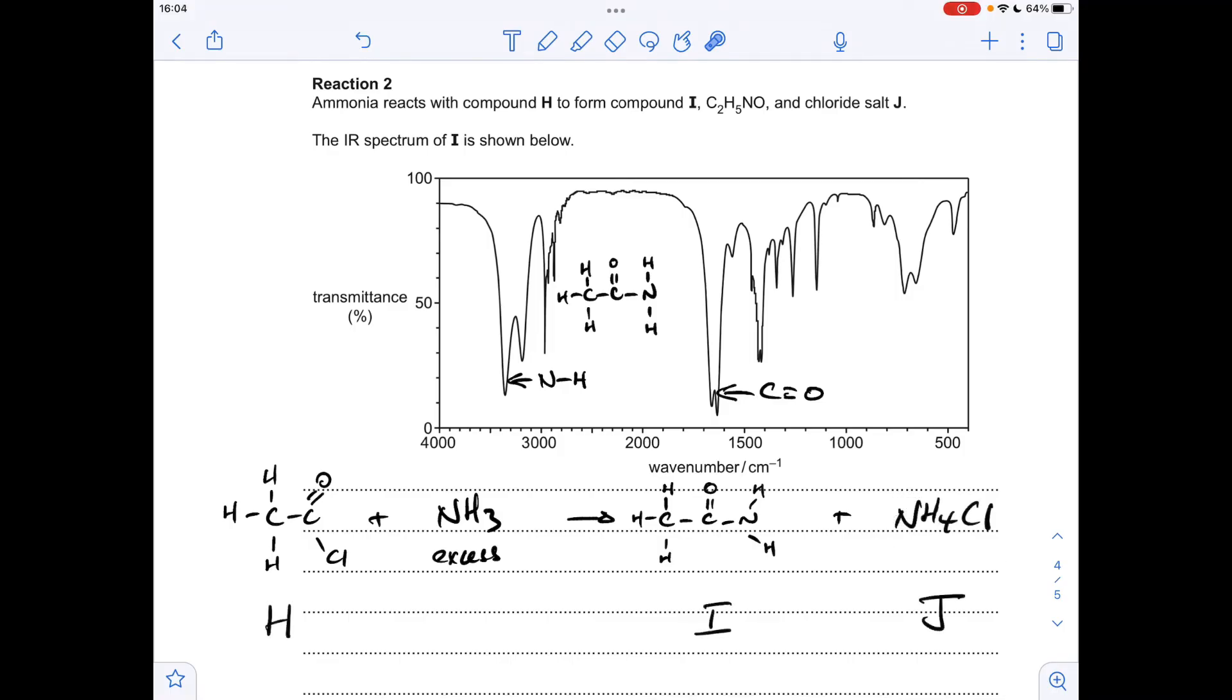The only thing left to do now is balance the equation. We've got two nitrogens on the right, only one on the left, so we'll put a 2 in front of the ammonia, and that's that equation sorted.